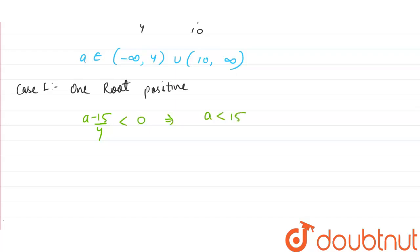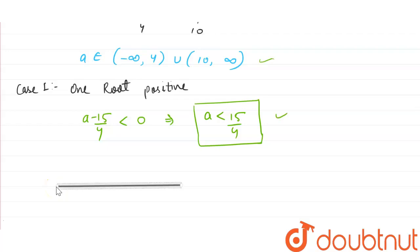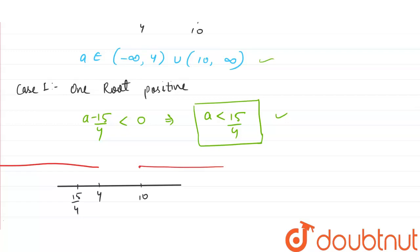From this we get A is less than 15/4. So we have one condition: A is less than 15/4. Now we take the intersection of both conditions. Drawing on the number line, we have the point 4, then 15/4, and then 10. The region from the discriminant condition is A belongs to minus infinity to 4 union 10 to infinity, intersected with A less than 15/4, giving A belongs to minus infinity to 15/4.